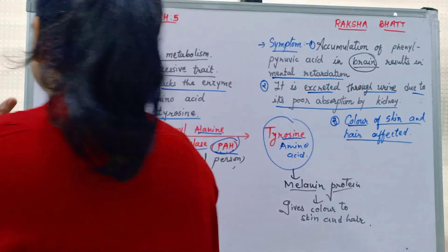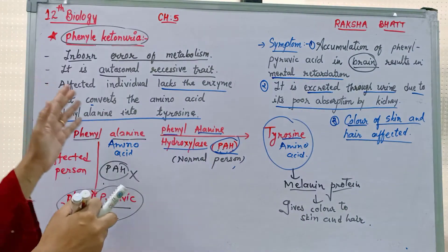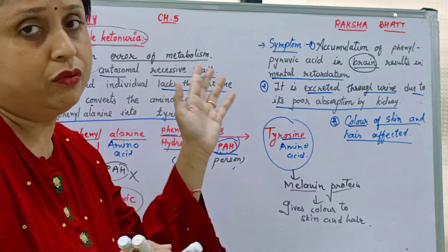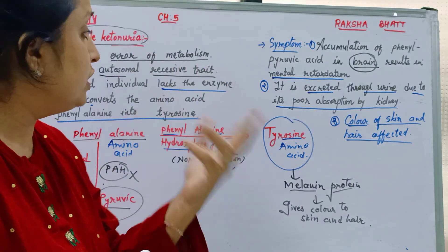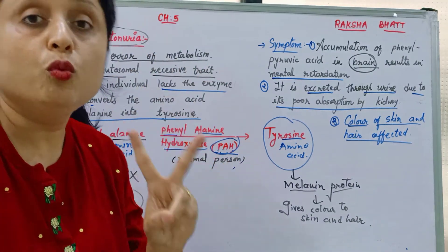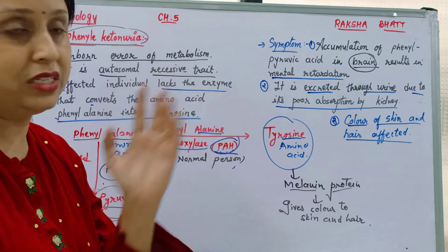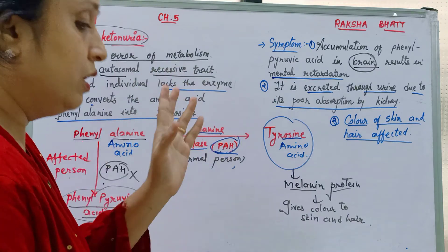So this is the most important theory of chapter number five. The weightage is two marks.